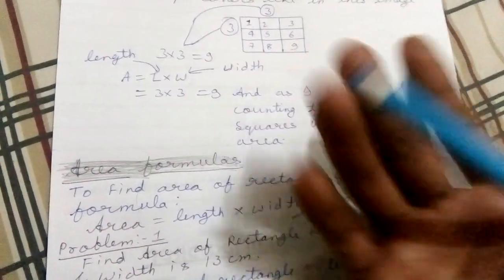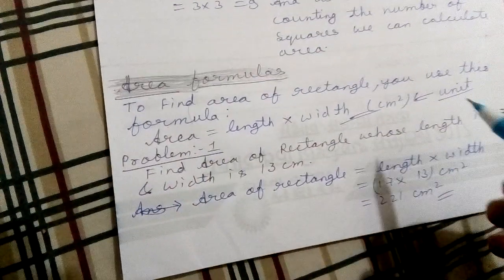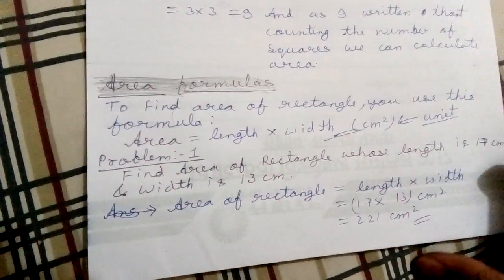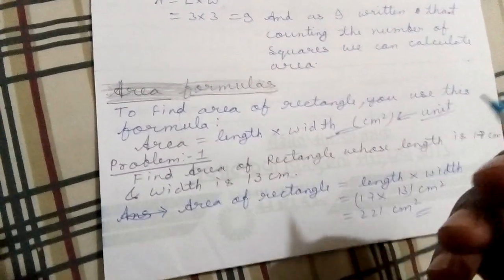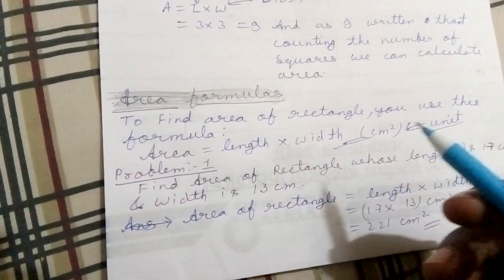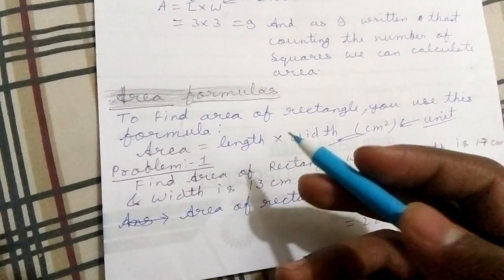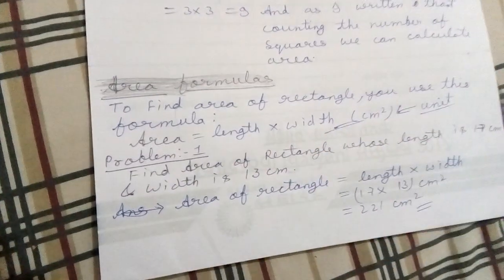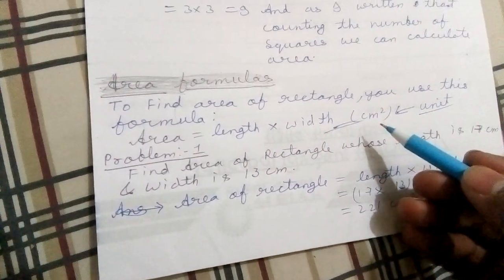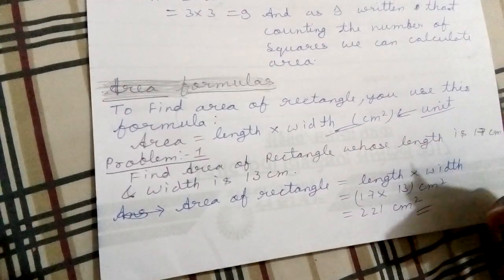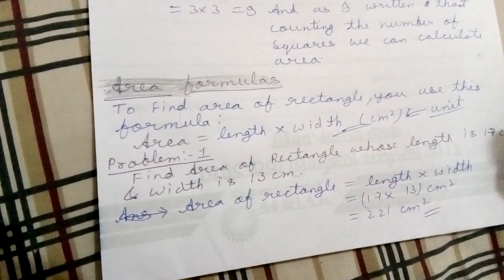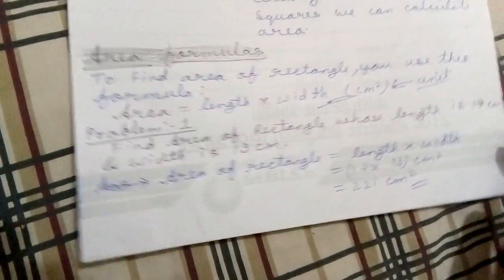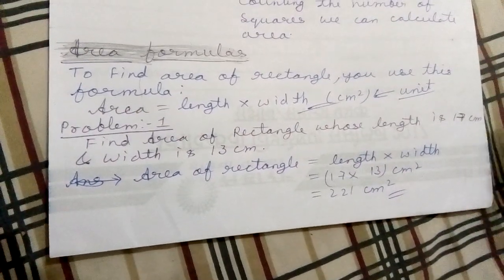Fourth thing is area formulas. This you must remember, this is very important. To find area of rectangle, use this formula: area is equal to length into width, or length into breadth. Units must be noted in your answer - centimeter square.